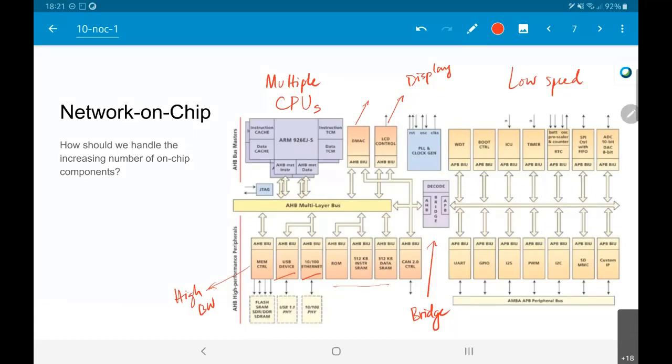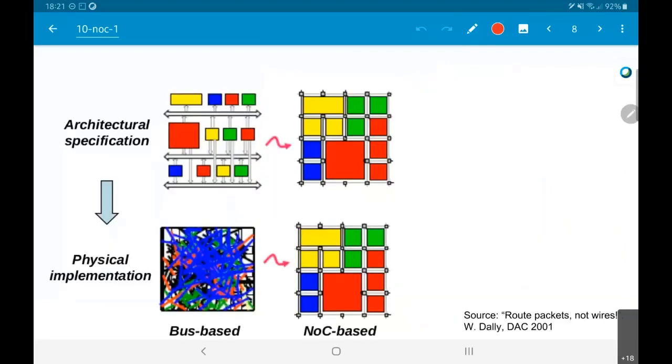The complexity of such systems is large. You have many different peripherals all on the same bus. And what ends up happening, this observation was made by William Daly in the Design Automation Conference in 2001, which is the starting point of this whole idea of networks on chip.